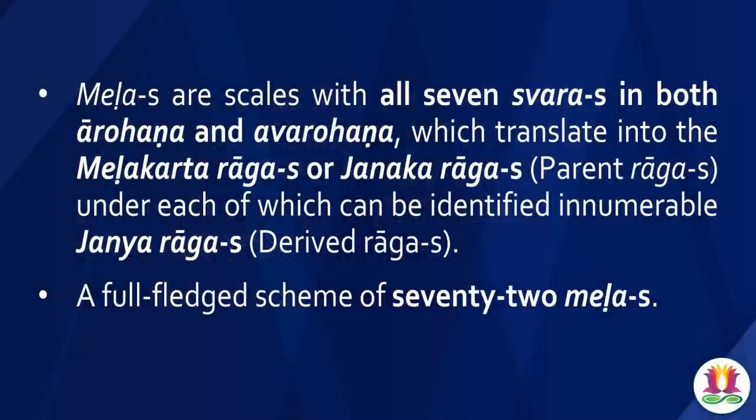How do you define a Mela? Melas are scales which have all the seven Swaras in both the Aarohana and the Avarohana. Aarohana is ascending and Avarohana is descending. So in both upward and downward movement of the Swaras, they have all the seven Swaras in order. A scale which has Sa-Ri-Ga-Ma-Pa-Da-Ni and Ni-Da-Pa-Ma-Ga-Ri-Sa will be a Mela.